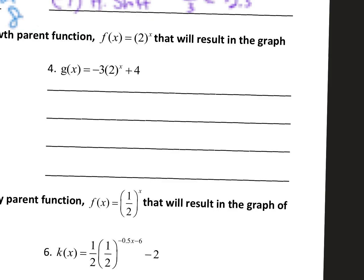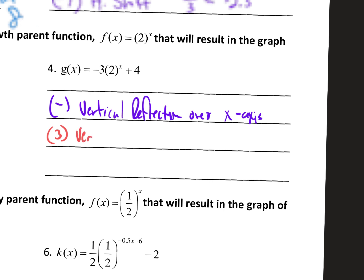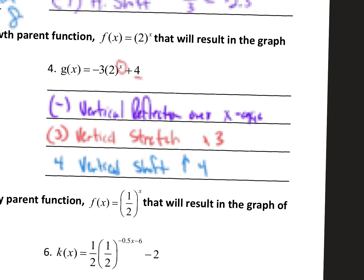Now we're looking at g sub x. That first negative is a vertical reflection over the x-axis. And that 3, the next one, is a vertical stretch by a factor of 3. There's nothing going on horizontally — no horizontal compression, no reflection. So now we go to that 4, and this is a vertical shift up. That's it.